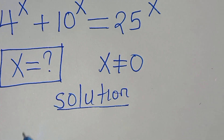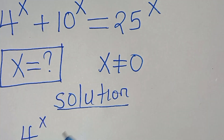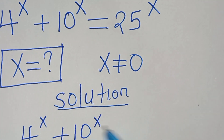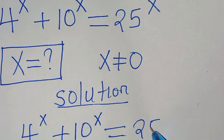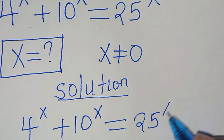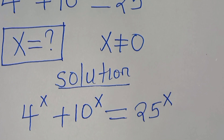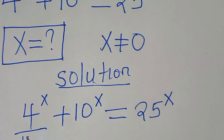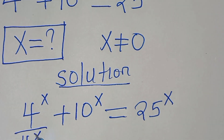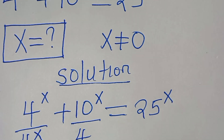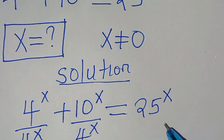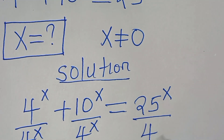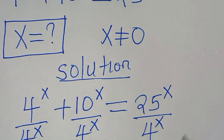We have 4 to the power of x plus 10 to the power of x equal to 25 raised to the power of x. The first step is to divide both sides by 4 to the power of x — on the left and on the right hand side by 4 to the power of x.